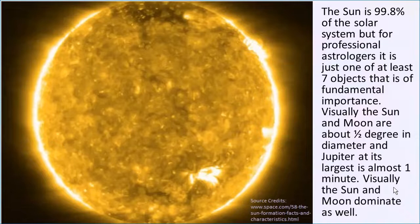It's interesting that the Sun is 99.8% of the solar system, so massively dominating. But in astrology, the Sun is not like 99% of the charge. We do give more emphasis to objects that are closer to Earth, like Mercury, Venus, Mars, Jupiter, Saturn, etc. We don't put as much emphasis on objects that are way out in the Kuiper belt. There are hundreds of thousands of objects going around the Sun, but we focus on 10 basically in Western astrology — the bigger, closer ones, which makes sense.